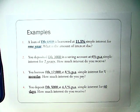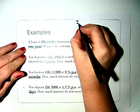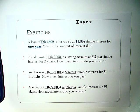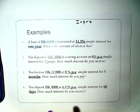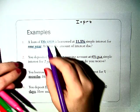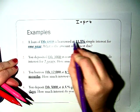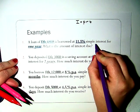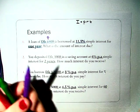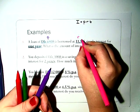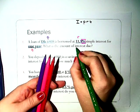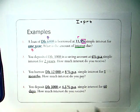So let's go ahead and look at some examples. We have I equals PRT. So let's start by identifying which is what: principal, rate, time, and interest. A loan of 6,800 is borrowed at 11.5% simple interest for one year. What is the amount of interest due? So this is our principal amount. The rate is very easy to find, it is whatever has the percentage symbol. And this interest is for one year, so that's our time.